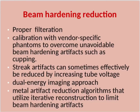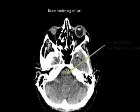Beam hardening reduction involves proper filtration and calibration with vendor-specific phantoms. To overcome unavoidable beam hardening artifacts such as cupping and streak artifacts, increasing tube voltage can sometimes be effective. Other approaches include dual energy imaging and metal artifact reduction algorithms that utilize iterative reconstruction to limit beam hardening artifacts.